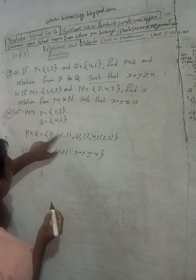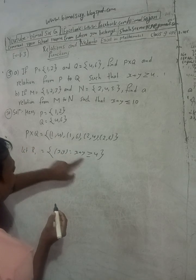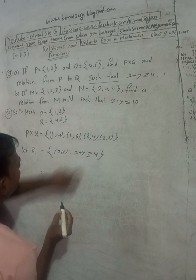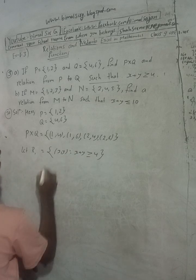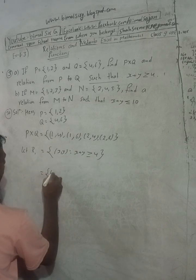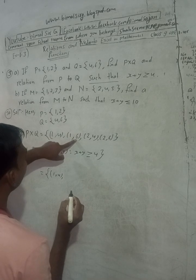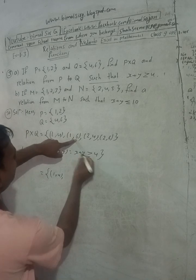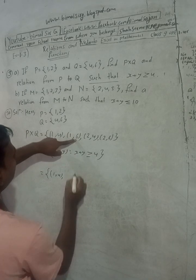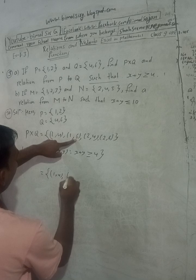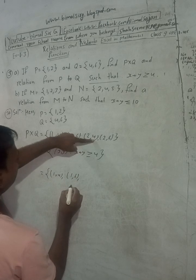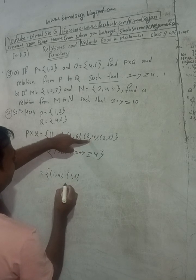Checking each pair: (1,4) — 1 plus 4 equals 5, which is ≥ 4, so it is included. (1,6) — 1 plus 6 equals 7, included. (2,4) — 2 plus 4 equals 6, included. (2,6) — 2 plus 6 equals 8, included.